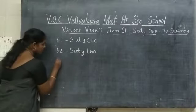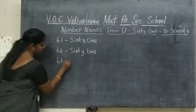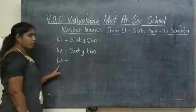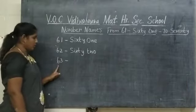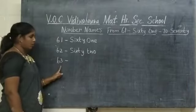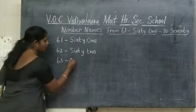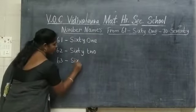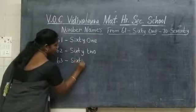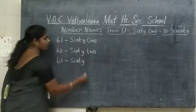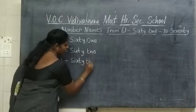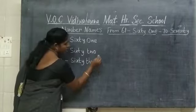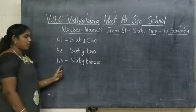The next number is 6, 3 — 63. What number is this? 63. What is the spelling of number 63? S-I-X-T-Y T-H-R-E-E. 63.